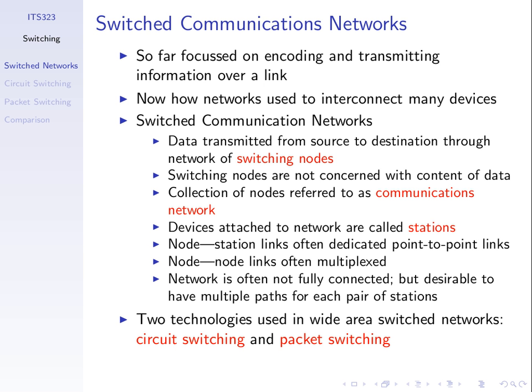With switching networks, we're now talking about a general concept of using switching, but it's commonly seen in large wide area networks. Examples include a network covering Bangkok, where a telecommunications company has nodes or switches throughout Bangkok with links between them — or covering Thailand, with multiple switches in each city and links between them, creating a switched network across the country, or even between countries. These are the common examples where we see switching networks in wide area networks.